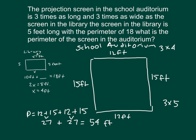We need to be sure to express our answer clearly. The library screen was 4 feet wide, so three times four was twelve feet for the school auditorium width. The library screen was five feet long, and three fives was fifteen feet. Then we figured out the perimeter. Always be sure to have that statement and to express your answer clearly.